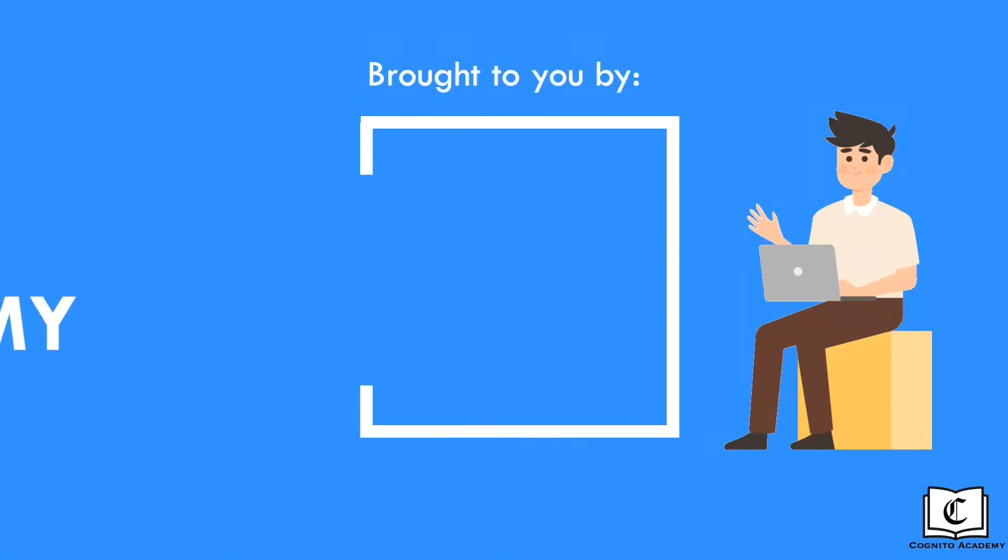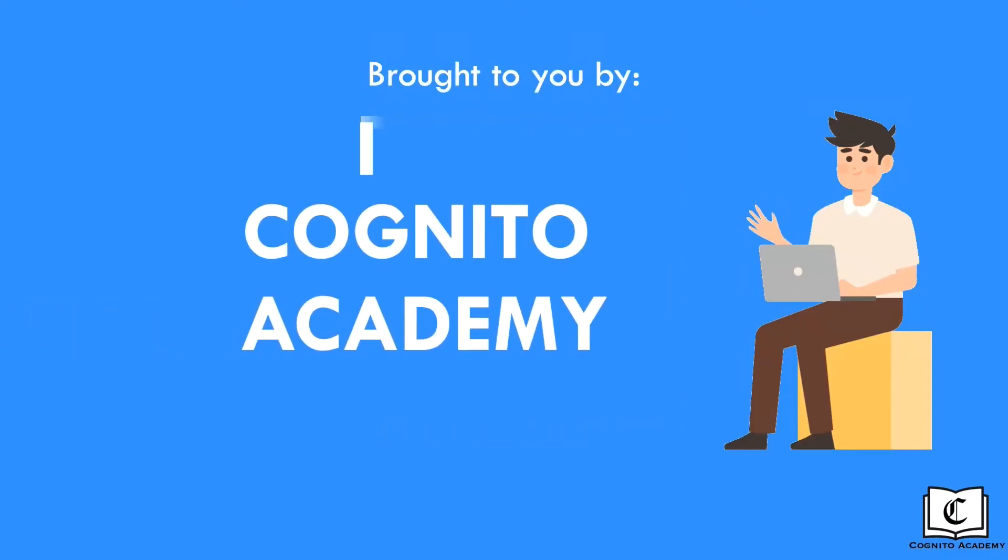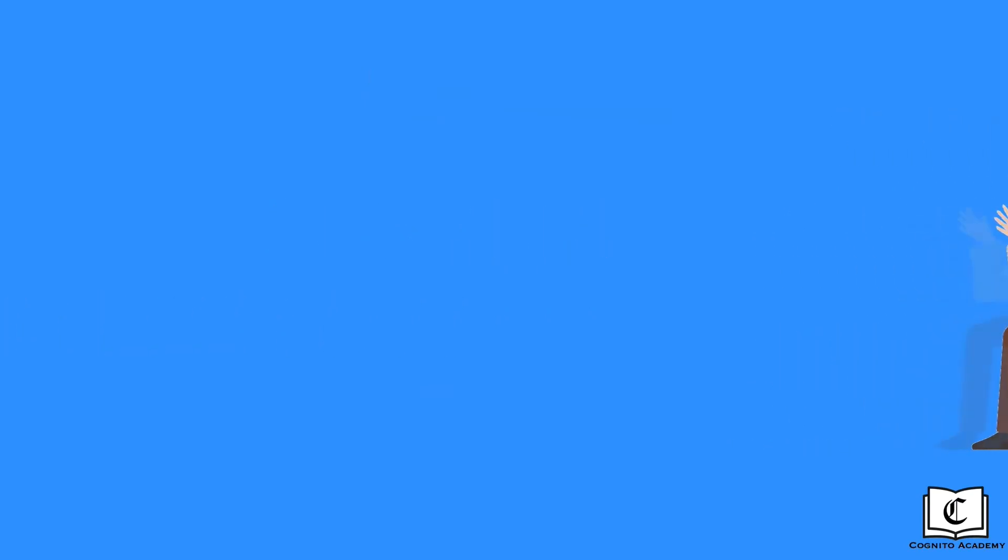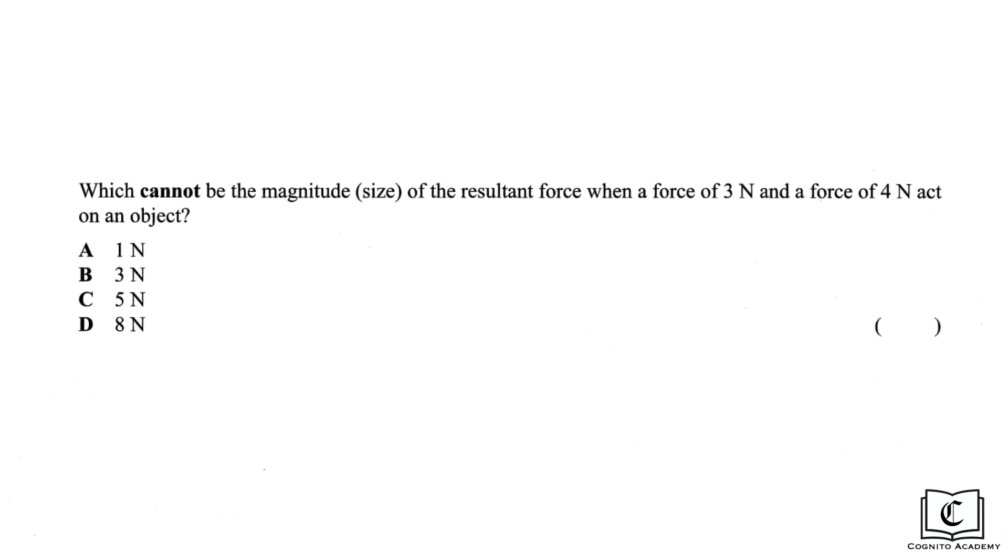Hi everyone, I'm Jerome from Cognito Academy and I'll be taking you through O-level physics questions in this series. Let's take a look at this question which asks which cannot be the magnitude of the resultant force when a force of 3 newtons and a force of 4 newtons acts on an object.